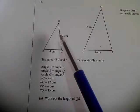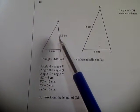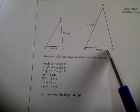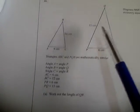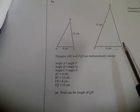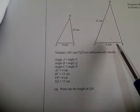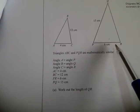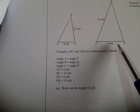PR is 6 cm, PQ is 15 cm. Then they said work out the length of QR. That's this length.